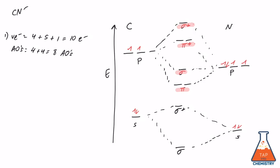In the last step, all we have to do is fill in the MO diagram with the ten valence electrons that we had. And that's it. This is the finished MO orbital diagram for CN minus.